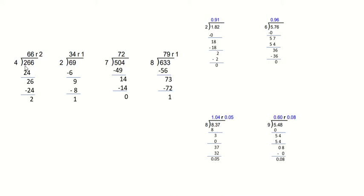The first thing we do is evaluate whether or not the 4 can go into the 2 any times. Without decimals, you just slide over to the next number and see if the 4 can go into 26 any amount of times. It can't go into the 2 because the 2 is smaller, but it can go into the 26 six times.